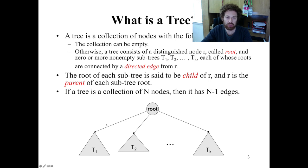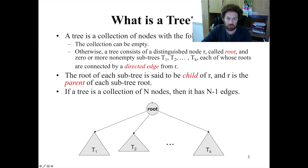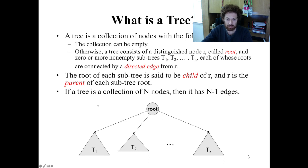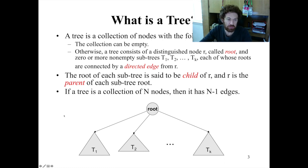A tree is basically a set of nodes and edges that connect these nodes. These nodes are connected in such a way that there will be no cycles, and everything will be connected — meaning given any node, you can reach any other node. If you're familiar with graphs, a tree is a special graph that is connected and has no cycles.